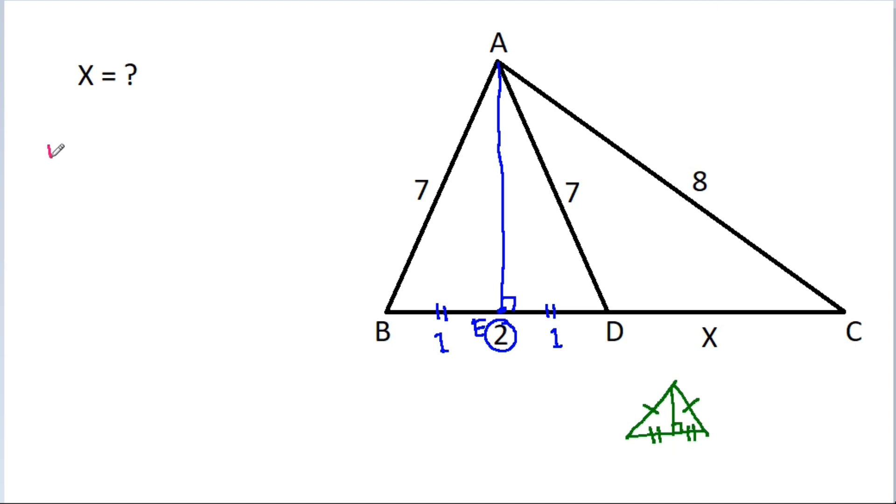And now, in triangle AED, AE squared plus ED squared will be equal to AD squared. And AE squared plus 1 squared is equal to 7 squared.